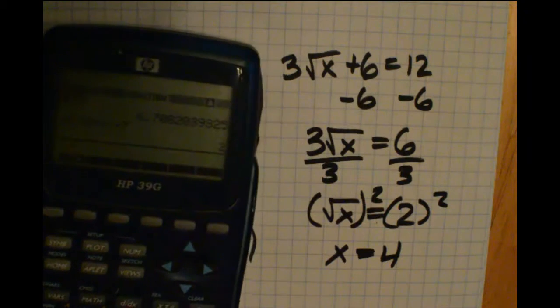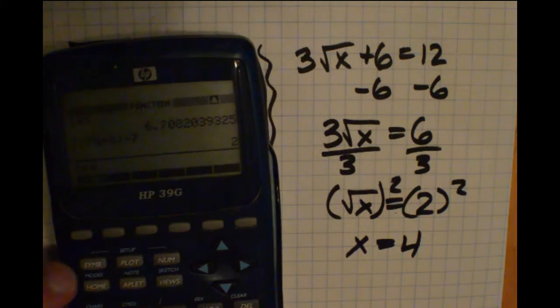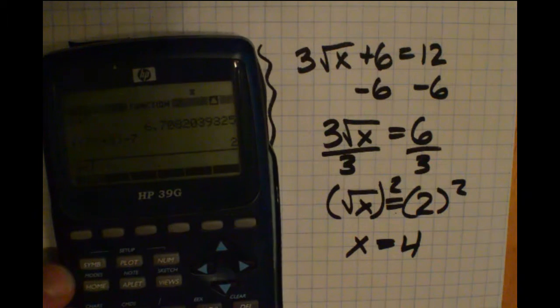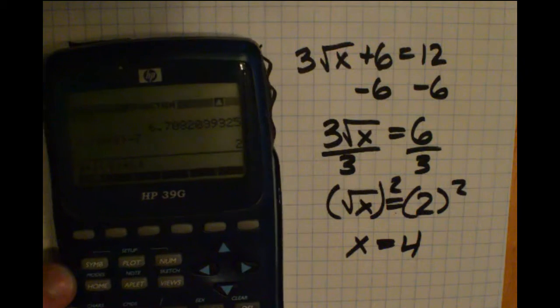Let's go ahead and see if this worked. So I'm going to take the 3 times the square root of 4 plus 6 and I should get 12. And I did.